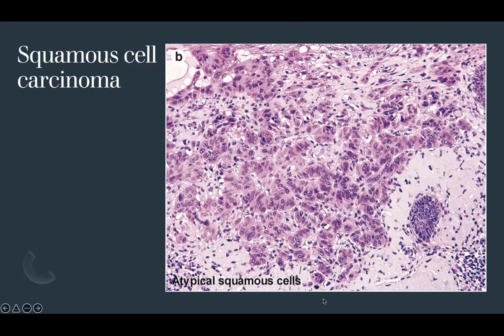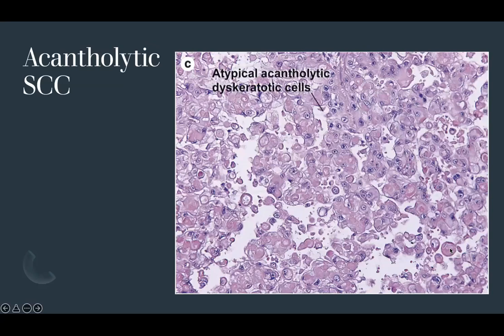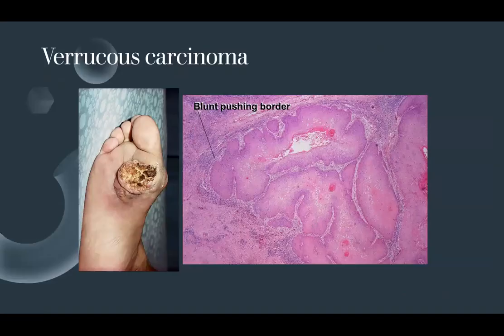Here is an example of invasive squamous cell carcinoma showing nests and infiltrating populations of atypical squamous cells invading into dermis heavily covered in solar elastosis. Acantholytic SCC shows abundant acantholysis between highly dysplastic atypical keratinocytes — a large breaking apart of cells with individual cells that are highly dysplastic.